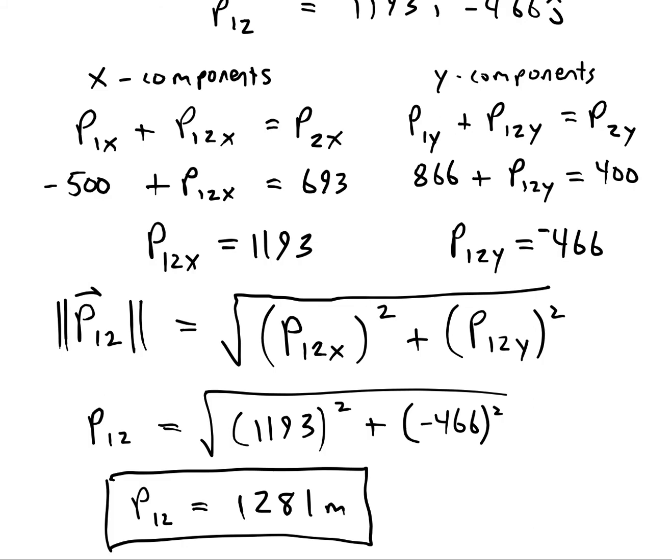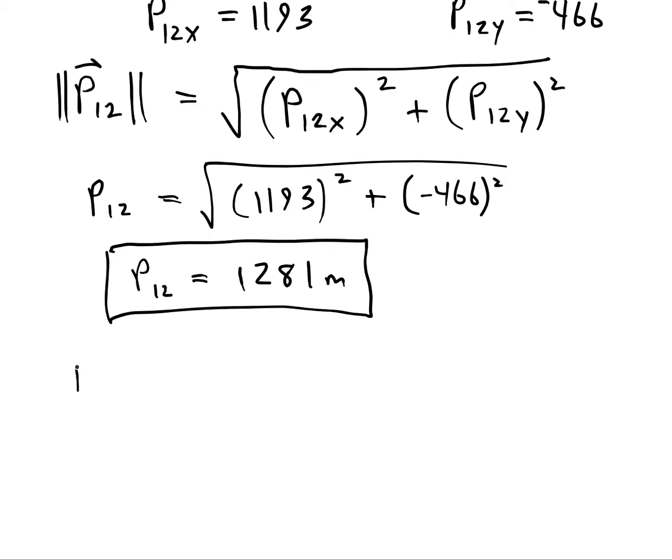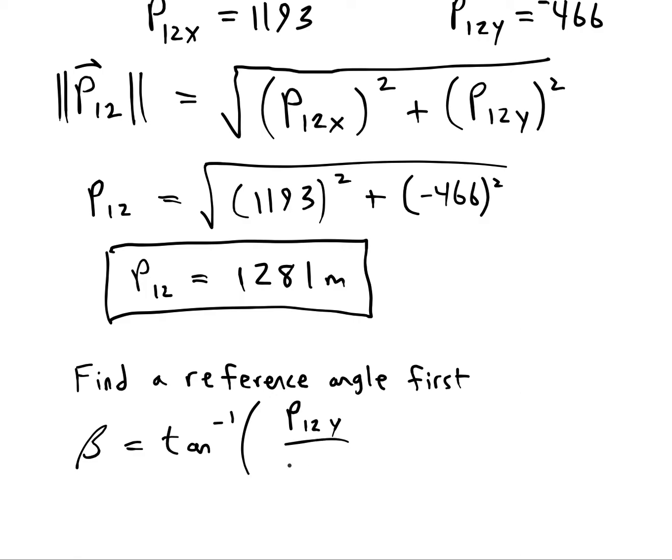Now we know how far the person has to walk to get to that P2. We also want to find the direction of the vector as an angle in standard position. So to do that, first we'll find a reference angle. The formula is the arc tan of the components as a fraction, but we just put in positive numbers for that. So we're talking about 466 over 1193, which is 21.3 degrees.